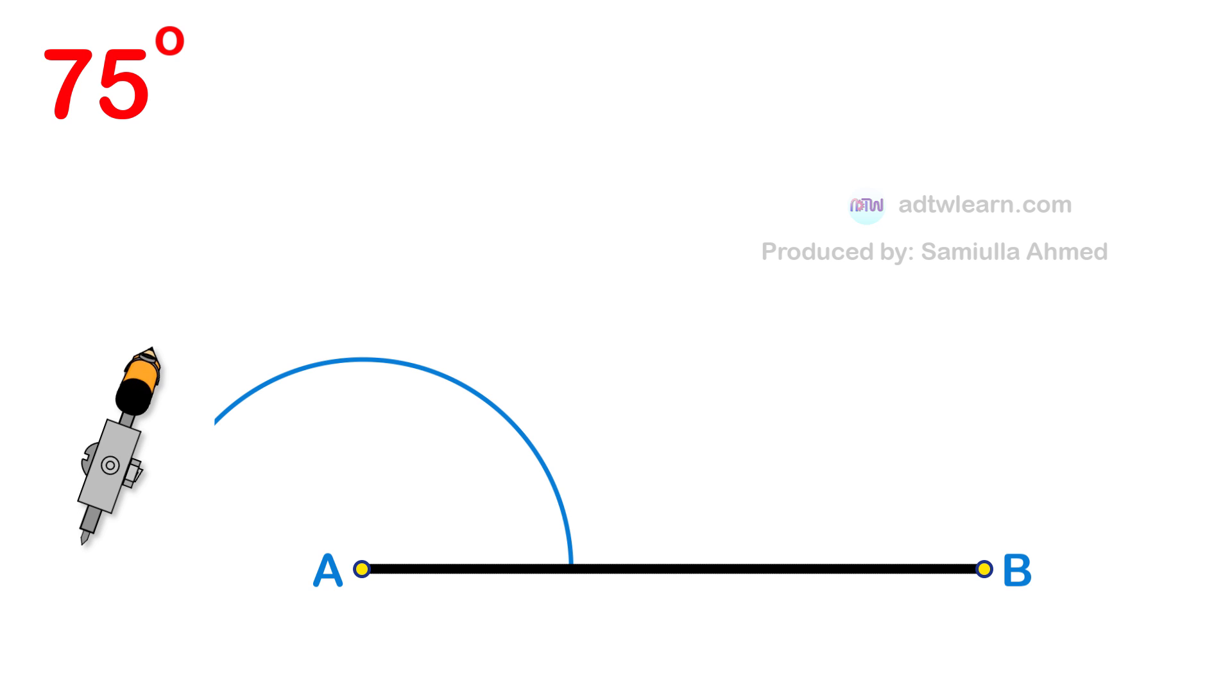After this, without changing the length of the compass and using this intersection point as a center, cut arcs as shown. After this, using these points as centers, cut arcs as shown.